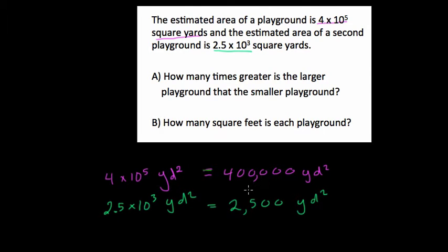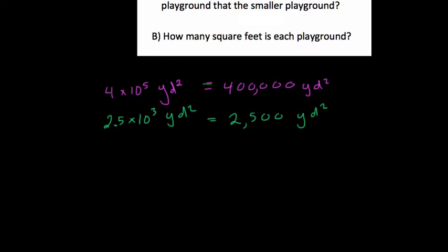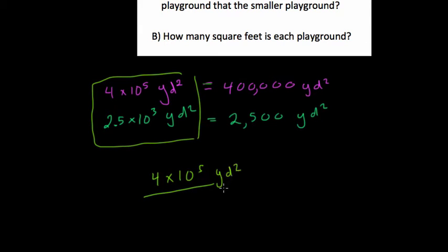Now we divide 400,000 by 2,500, but I think you'll find that it's very easy to do this in scientific notation. So I would leave the numbers in this form right here and set up the division: 4 times 10 to the 5th square yards divided by 2.5 times 10 to the 3rd square yards.